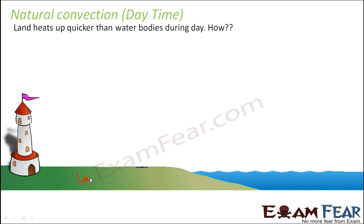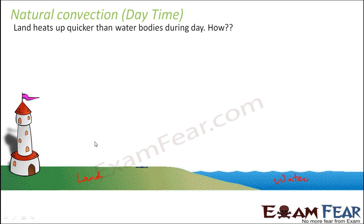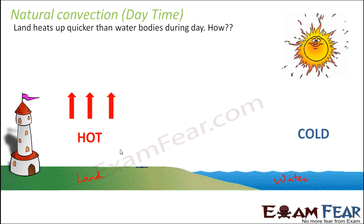So this is the land and this is the water body. Land gets heated up more quickly. When the land is hotter, the hot air near the surface also gets heated up. As it gets heated up, it expands. When it expands, it becomes less dense and then it moves up.